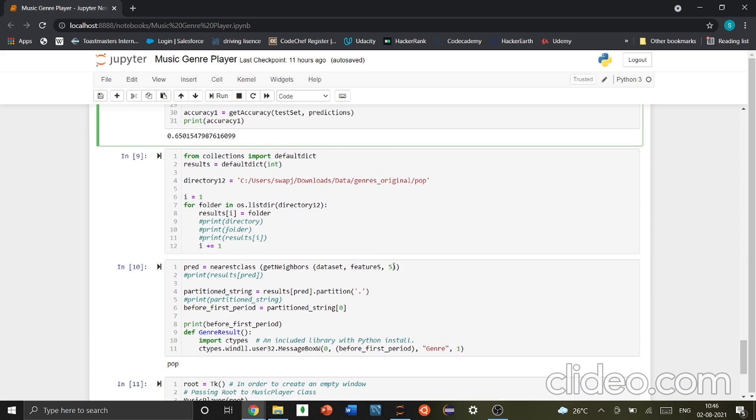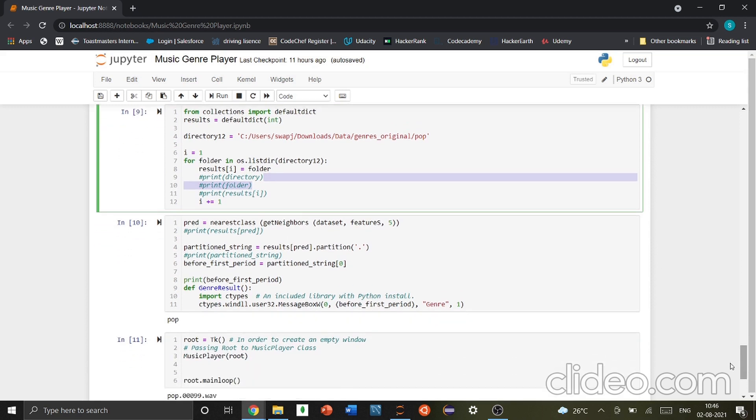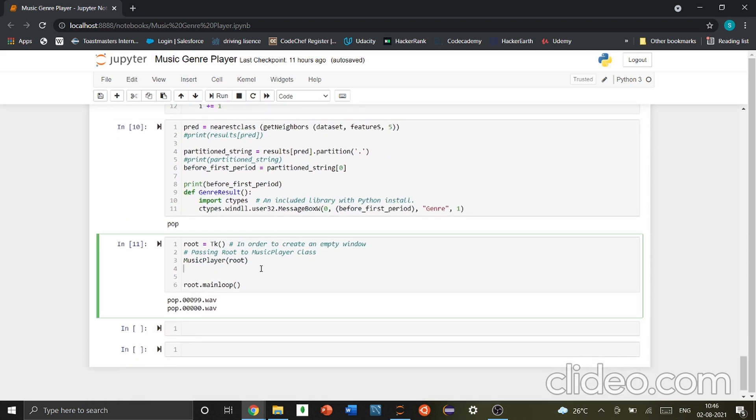Then, going to this part, again, the directory in which it takes one audio file and then it puts the results into an array. Here, we'll directly jump to this part here. Here is actually where the genre comes. We just printed it here to make sure that we can actually see it. This genre result function has been defined so that we can actually see this output again in the UI.